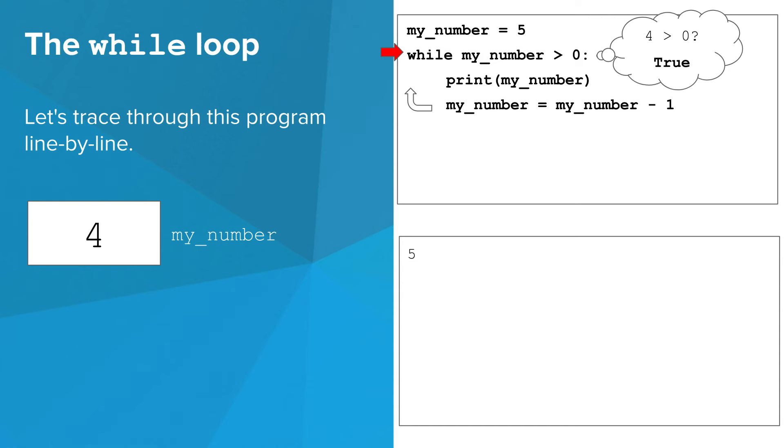Since 4 is greater than 0, the condition is true once again, so the interpreter moves to the first line of the body. 4 is printed, and the value of my_number is changed to 3. We loop back to the top, 3 is greater than 0, the condition is true, 3 gets printed, my_number becomes 2. Back to the top, 2 is greater than 0, print 2, change my_number to 1. Back to the top, 1 is greater than 0, print 1, change my_number to 0.